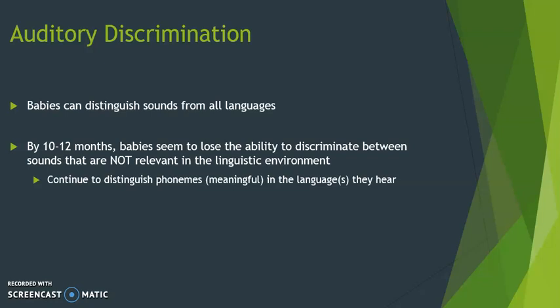Babies continue to distinguish phonemes that are meaningful differences in the languages they hear. For instance, in English, the alveolar T versus the retroflex T is not an important or meaningful difference. But T versus D is meaningful. It's important to note that the voicing difference between T and D is just as slight as the difference between the two T sounds — one of them feels very important to us only because it's meaningful in English.